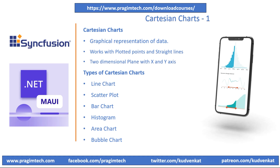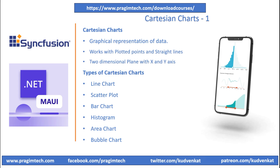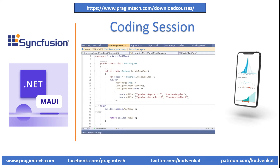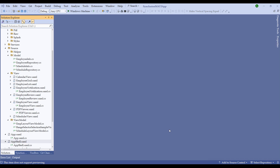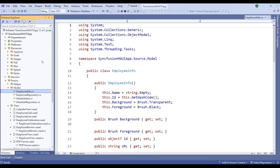Many software tools such as Microsoft Excel allow users to easily create Cartesian charts. Now that we understand Cartesian charts at a high level, let's switch to the coding session. I will be using the same project from previous sessions, following the MVVM approach, and will continue to use it in this and upcoming sessions.